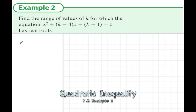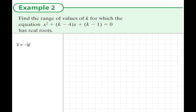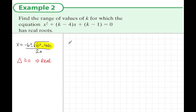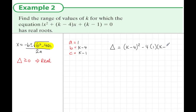Example 2: find the range of values of k for which x squared plus (k minus 4)x plus (k minus 1) equals 0 has real roots. A quadratic has real roots when the discriminant b squared minus 4ac is greater than or equal to 0. Here a equals 1, b equals k minus 4, and c equals k minus 1, so we need (k minus 4) squared minus 4 times 1 times (k minus 1) to be greater than or equal to 0.